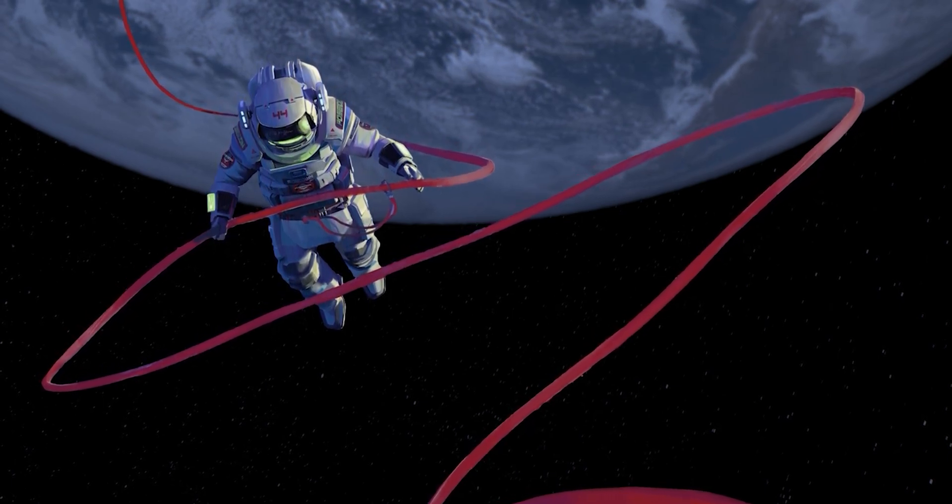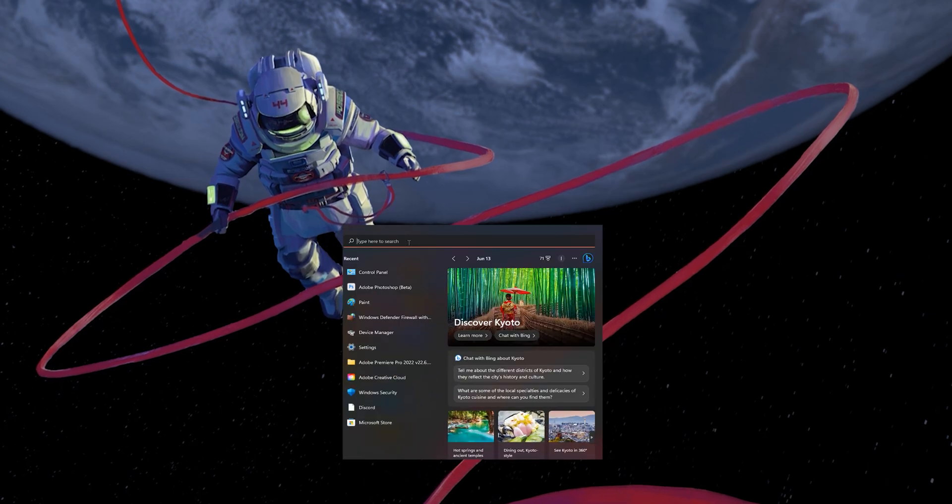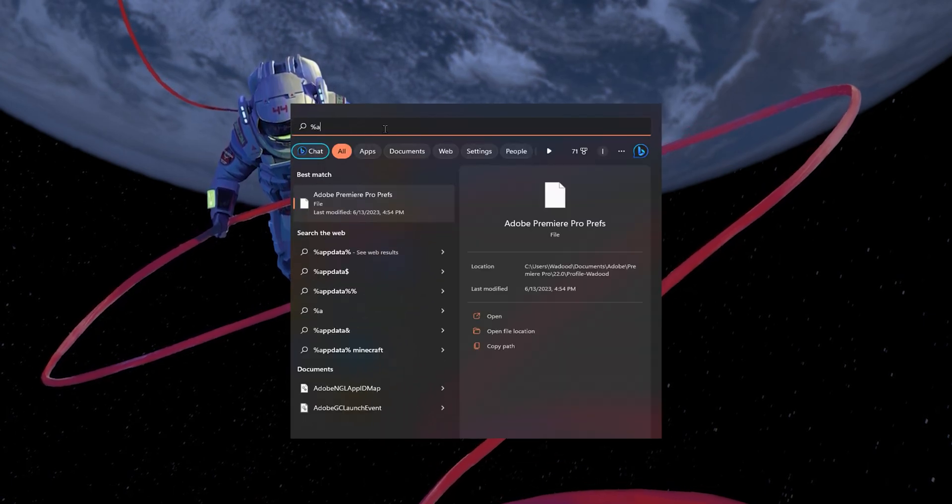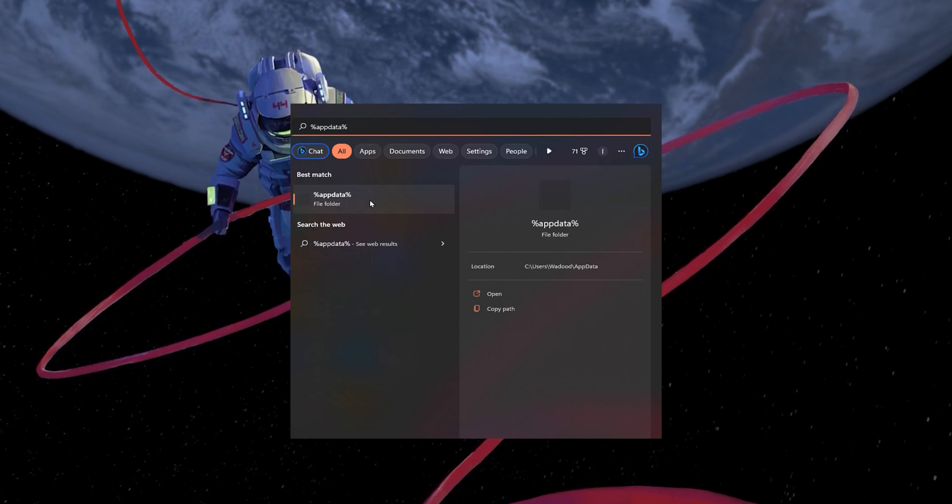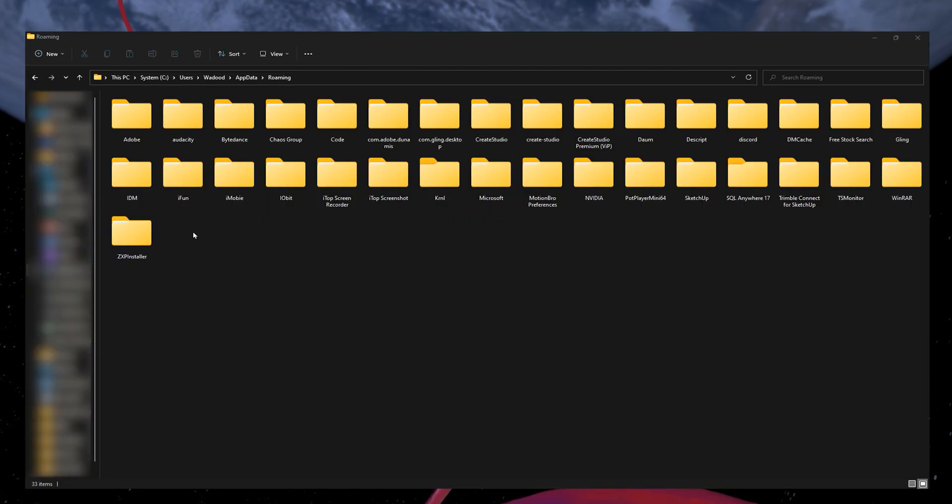Make sure your Roblox application is not running on your PC and search for %AppData% in your Start Menu search. After hitting Enter, your File Explorer will open up and find the krnl folder.